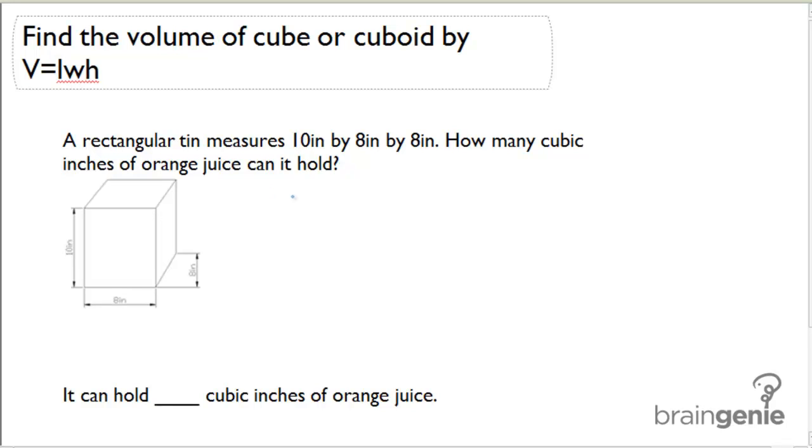In this example, we're going to find the volume of a cuboid using the V equals length times width times height formula. Below we have a rectangular tin measuring 10 inches by 8 inches by 8 inches. How many cubic inches of orange juice can it hold?